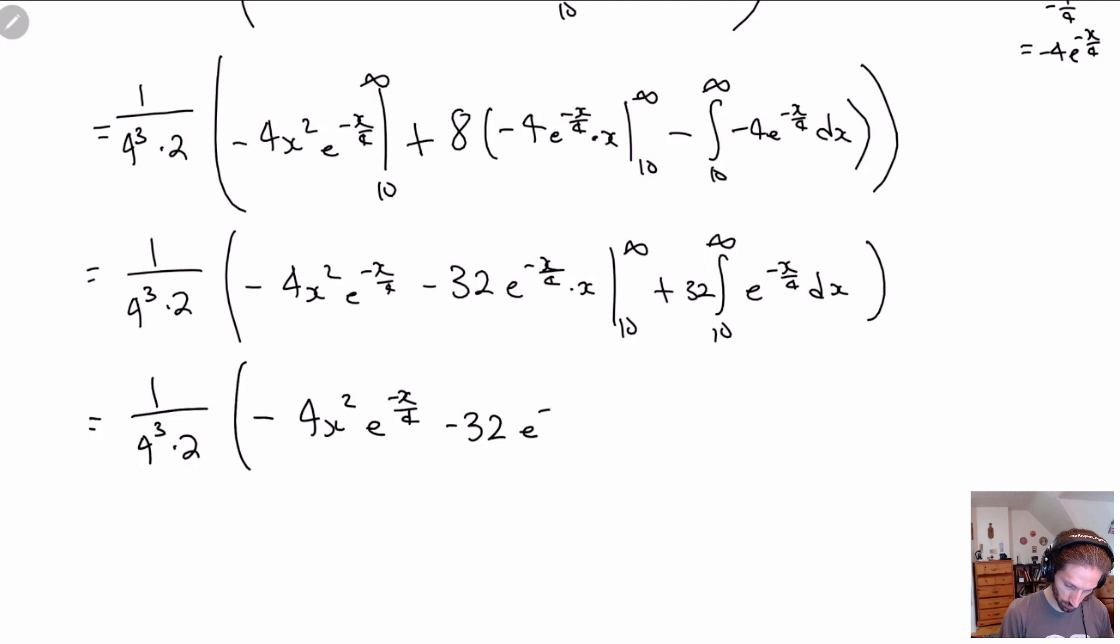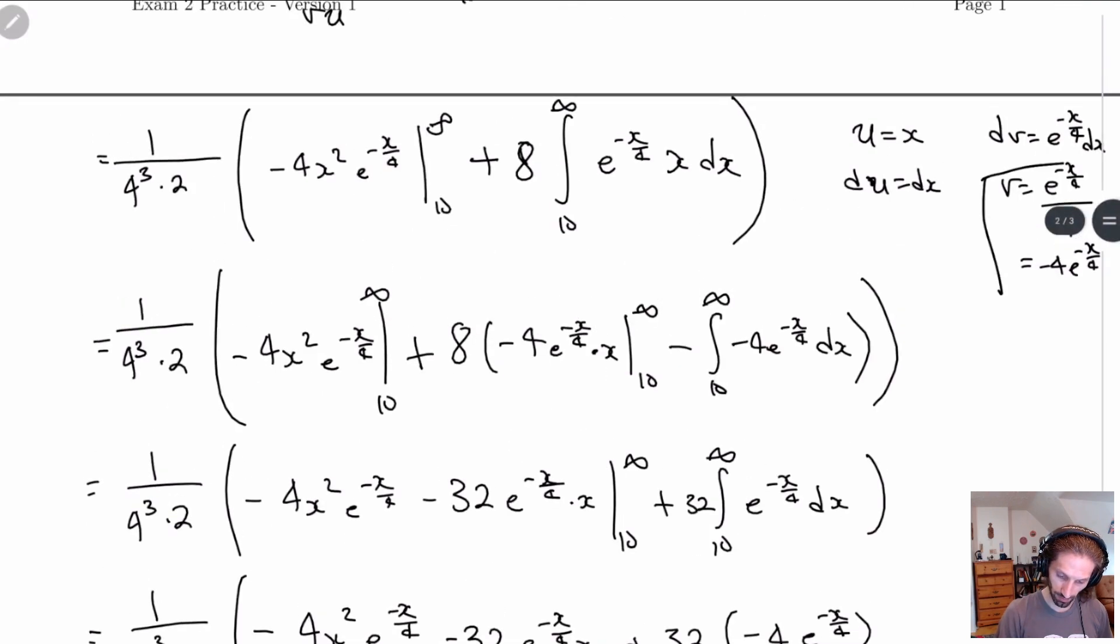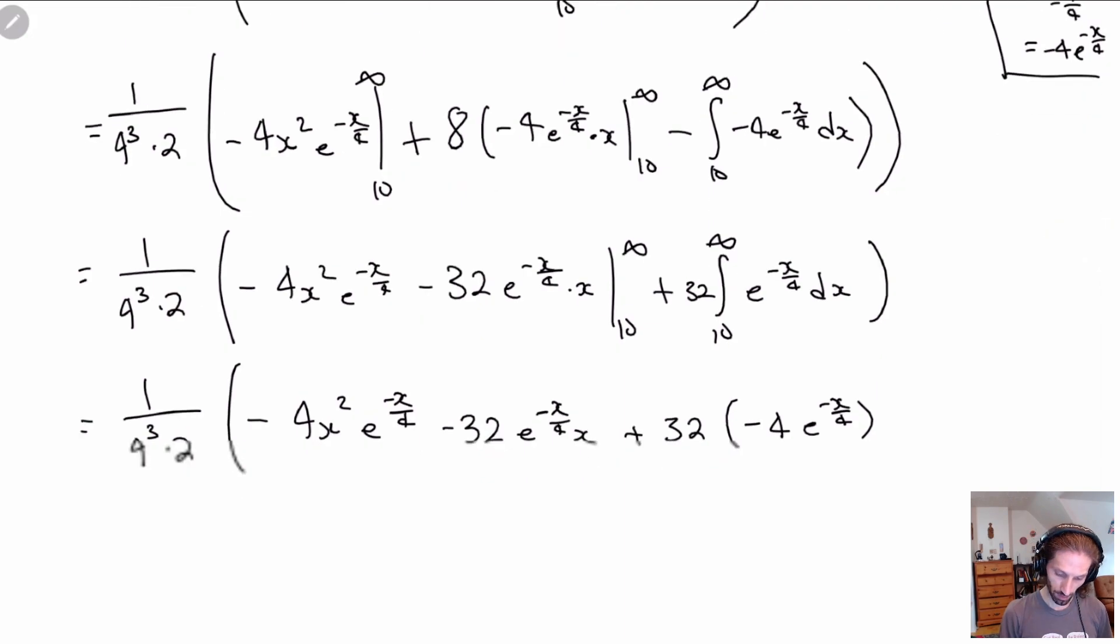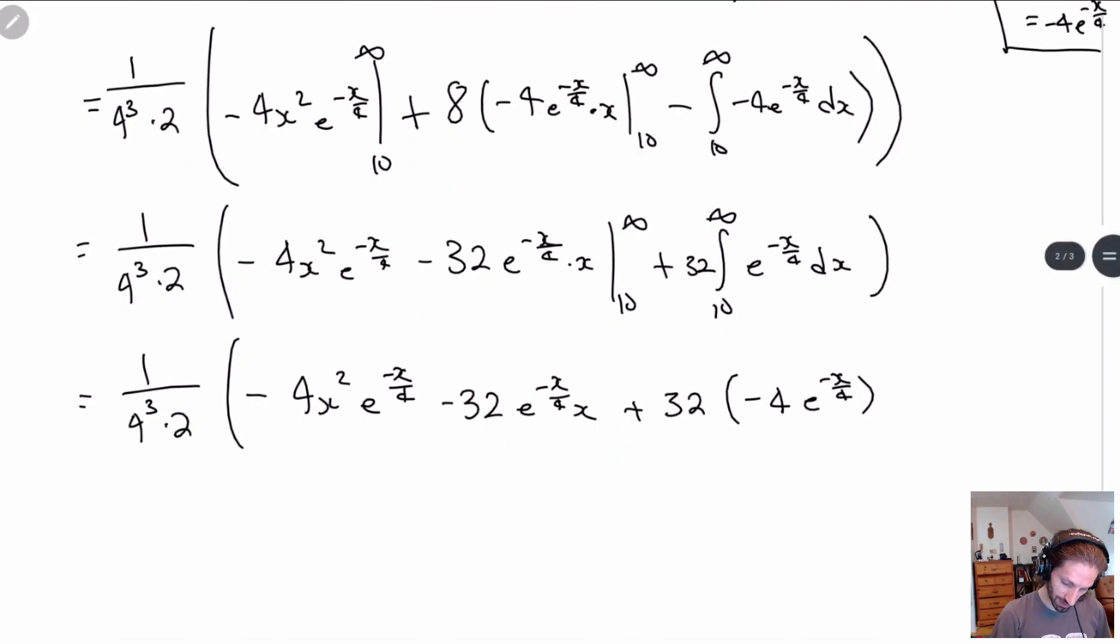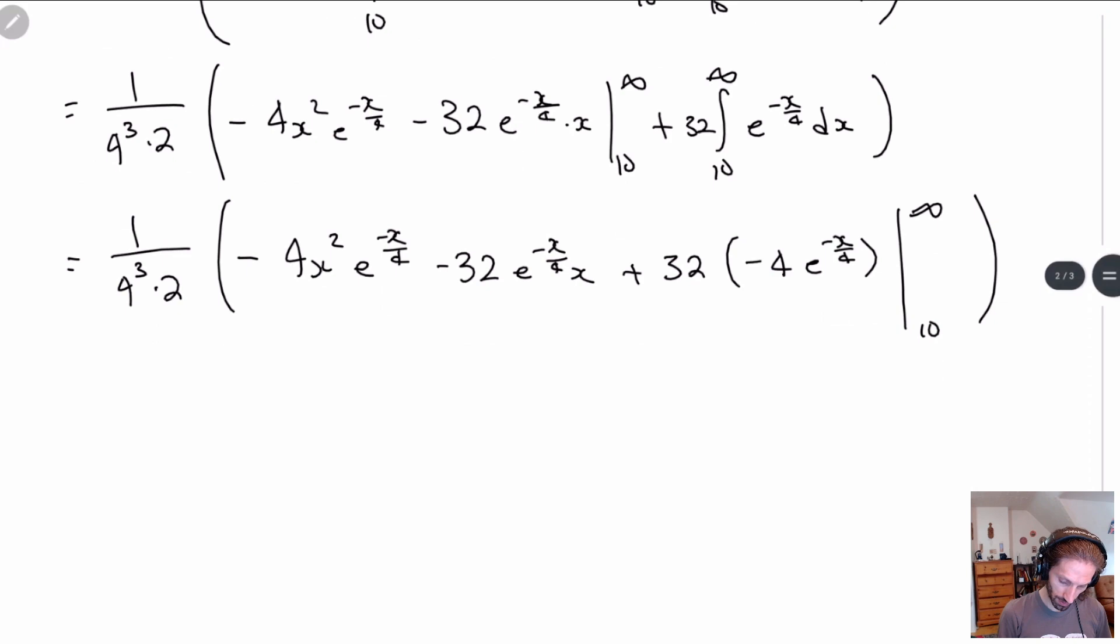And then here at this point we just have one little thing to note. We just have to do this final integral, but at this point we've done this integral quite a few times. This is just minus 4 e to the minus x over 4, and here remember that we're getting this from here. So we have this part up here, that's basically where we got that from. So we have this, and basically we're doing all of this from 10 to infinity.